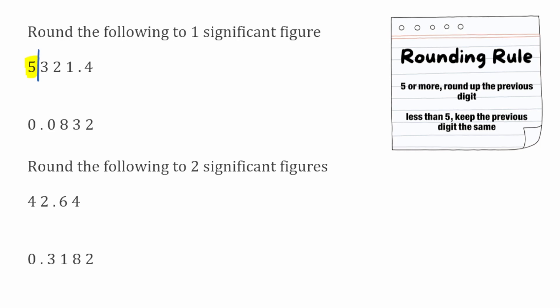We follow our rounding rule: if the digit on the right of the line is five or more we round up the previous digit, and if it's less than five we keep the previous digit the same. We look to the right of our line and we've got a three, so because it's less than five the five is going to stay the same. We write that underneath and then need placeholders — a zero under the three, a zero under the two, and a zero under the one. We can put our decimal point in, but we can stop there. So 5321.4 rounded to one significant figure would be 5000.